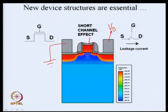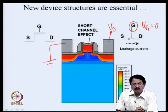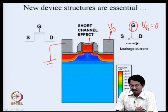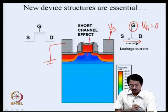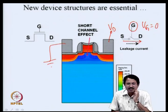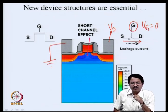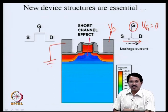With scaling, the drain terminal is coming closer and closer to the source — this is what we call a proximity effect. We need to consider the two-dimensional distribution of electric field. The drain electric field has started influencing the transistor even without the gate turning it on, meaning when gate voltage is 0, ideally you should have near-zero current, but because of this proximity effect you have very significant leakage current.